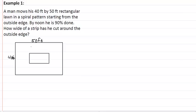Well, he's cut 90%, that's going to be this. That means he has 10% left. So this inner rectangle is going to be 50 minus 2x and 40 minus 2x. So that means 10% of our original area which is the 40 times 50, which would give us 2000, equals our smaller area which is the 40 minus the 2x and the 50 minus 2x.